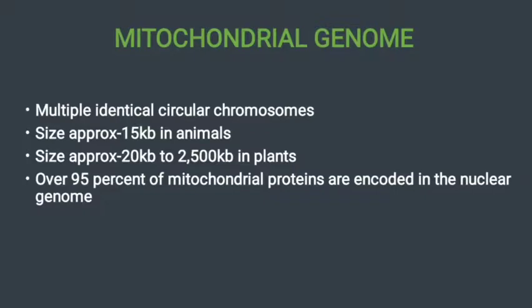Next we see the mitochondrial genome. Mitochondrial genomes consist of multiple identical circular genomes. The size is approximately 50 kb in animals and approximately 20 kb to 2,500 kb in plants. Over 95 percent of mitochondrial proteins are encoded in the nuclear genome.